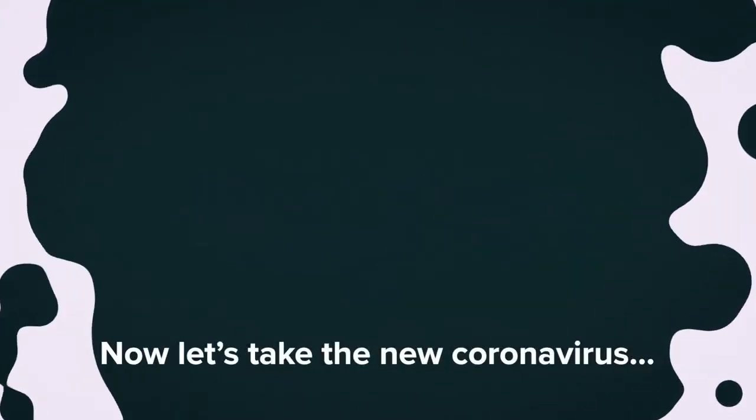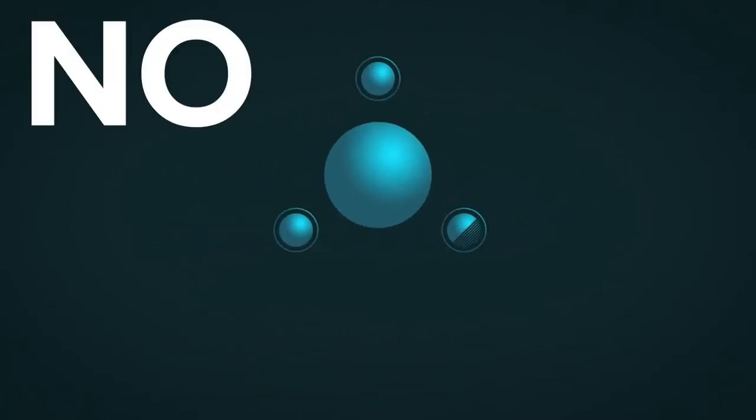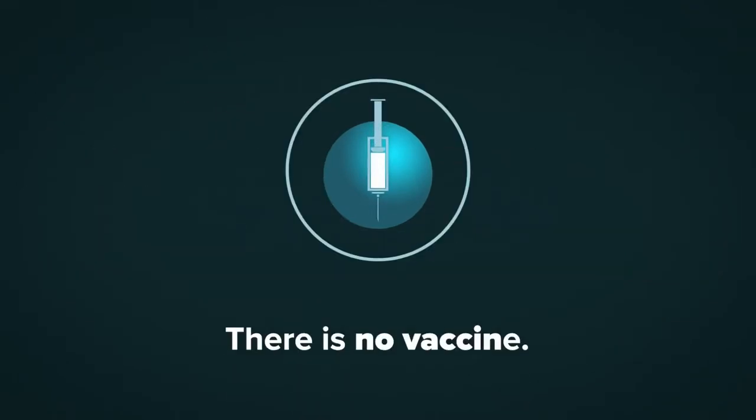Now let's take the new coronavirus. Its R-naught of 2 or 3 suggests it's not as harmful. But as of now, no one has protection. There is no vaccine.